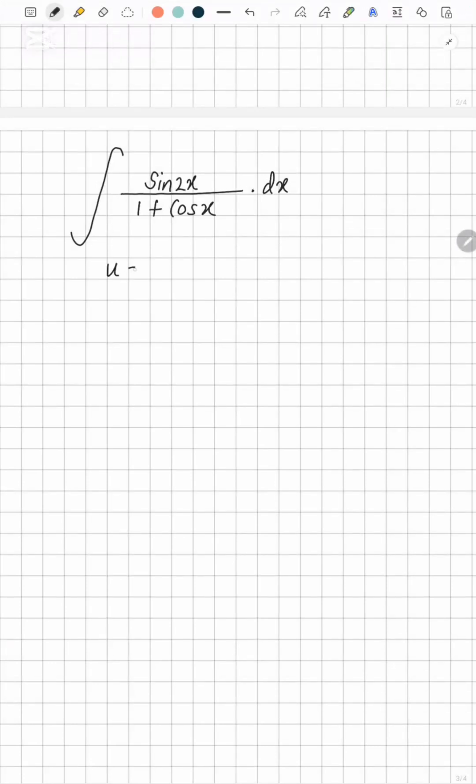Hi everyone, so when doing this question you can take a substitution of u equals 1 plus cos x, so du over dx equals minus sin x. And you also need to know that sin 2x equals